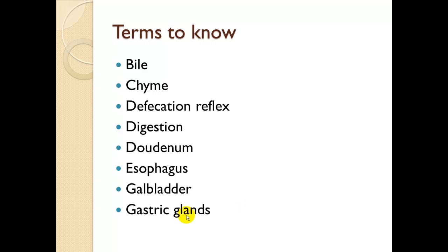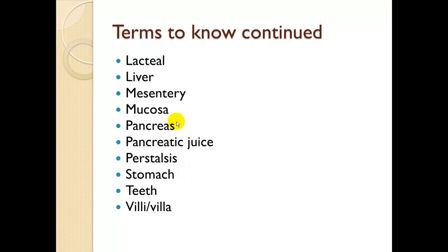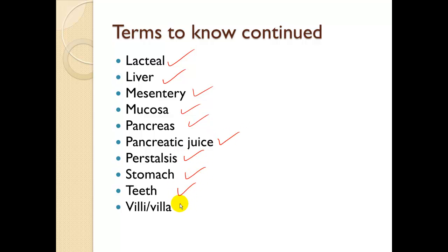Terms to know — please look over these in the book as there will likely be test questions: bile, chyme, defecation, reflux, digestion, duodenum, esophagus, gallbladder, gastric glands, lacteal, liver, mesentery, mucosa, pancreas, pancreatic juice, peristalsis, stomach, teeth, villi, and villus.